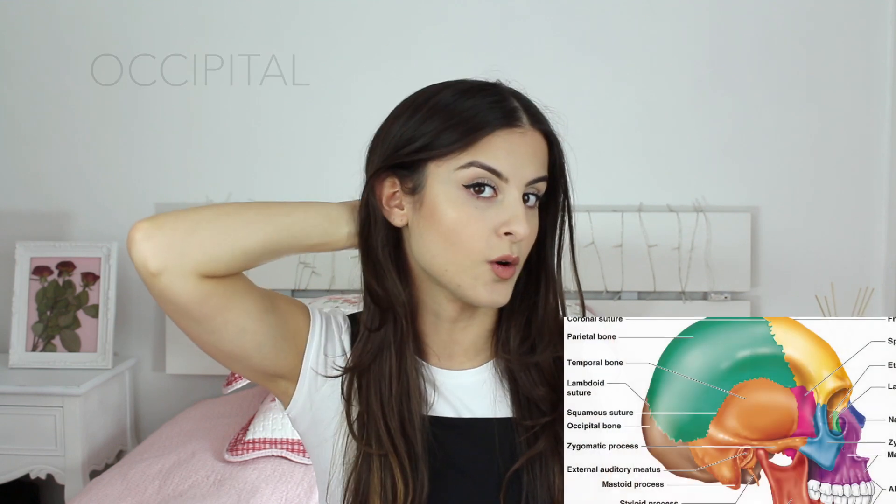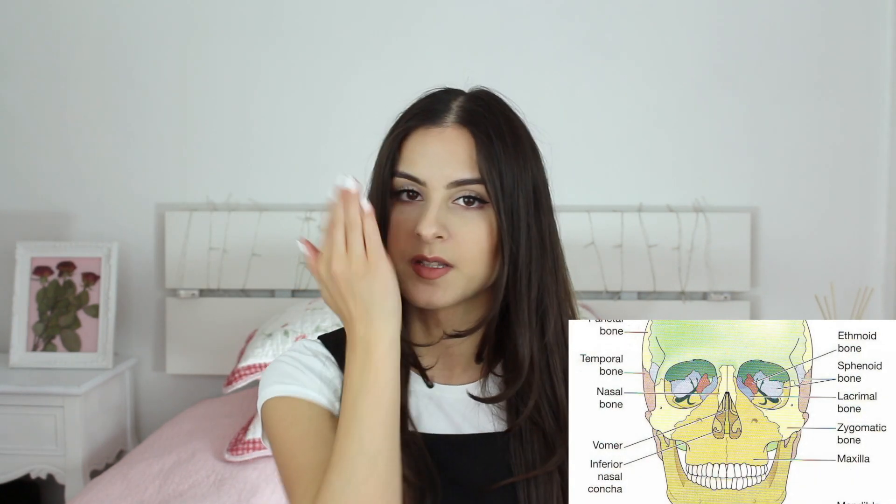Then there's parietal, which is at the top and back of the skull, and then occipital, which is at the very back of your skull. So far we have: frontal, sphenoid — I always just point at the side bits here because it's in the middle and behind your eyes — temporal at the sides, parietal, and occipital.